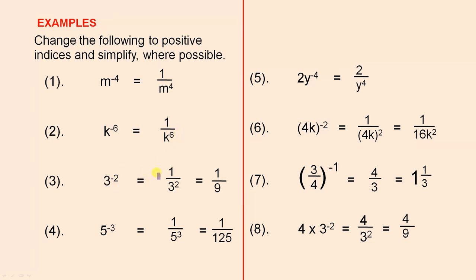3 to the power of minus 2, or negative 2, is 1 over 3 to the power of 2. We can simplify this. Although that's a positive index, we can simplify it because 3 squared is 9, so we have 1 over 9. 5 to the negative 3 is 1 over 5 to the power of 3. And 5 to the power of 3 is 125, so we have 1 over 125.